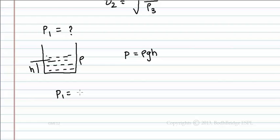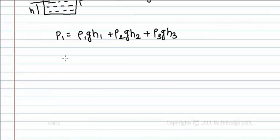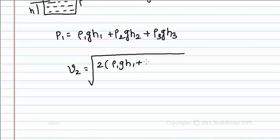So p1 equals rho1 gh1 plus rho2 gh2 plus rho3 gh3. Now let us substitute this p1 value in the above equation. That is v2 equals root of 2 into rho1 gh1 plus rho2 gh2 plus rho3 gh3 by rho3.